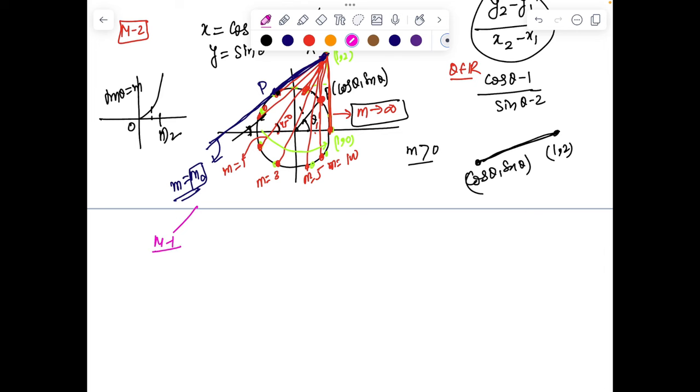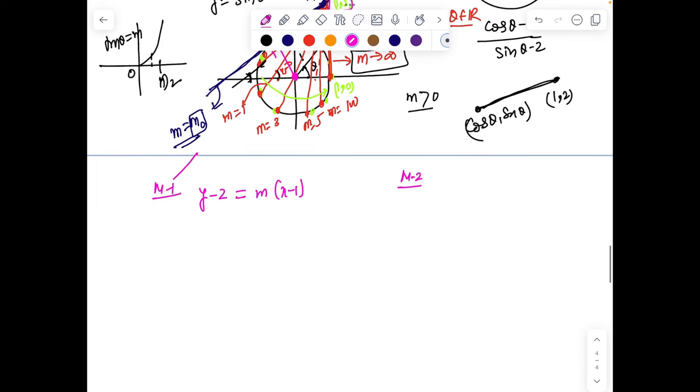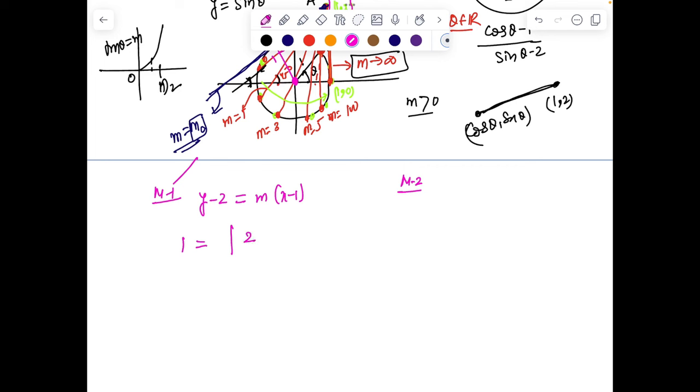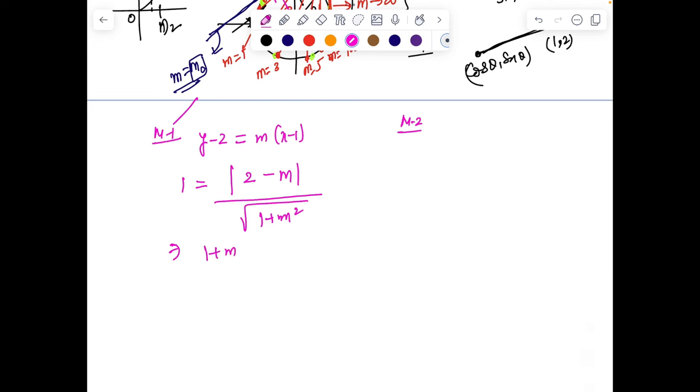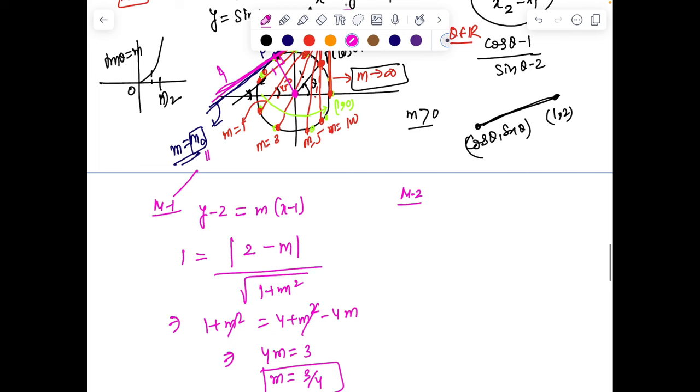There are many ways of finding this m₀. One way is coordinate geometry. I can write the equation of line passing through (1, 2) tangent to the circle as y - 2 = m(x - 1). The distance from center (0, 0) to the line must be 1. So 1 = |2 - m|/√(1 + m²). Solving: 1 + m² = 4 + m² - 4m. Very interestingly, we get 4m = 3, so m = 3/4.